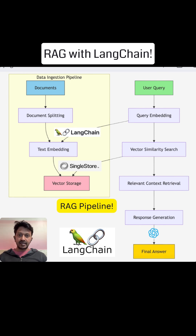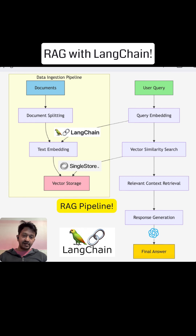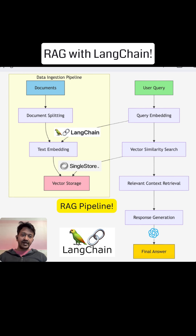To mitigate this hallucinating behavior, there are basically three most-talked-about options or strategies. One is fine-tuning, the second one is prompt engineering, and the third one is retrieval augmented generation. Fine-tuning is where you take a base model and train it using your own custom data so that it understands your vocabulary, but it is very costly and requires a lot of effort, challenges, and compute power.